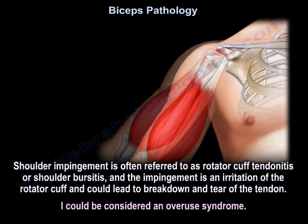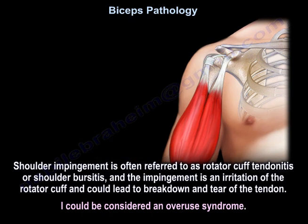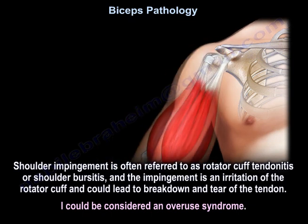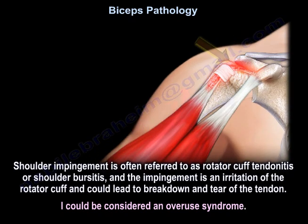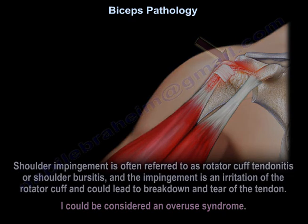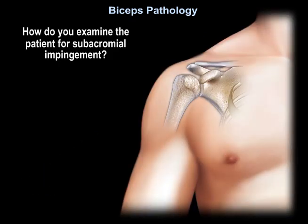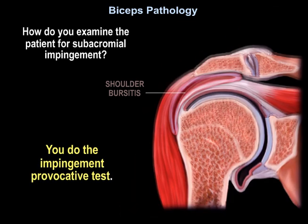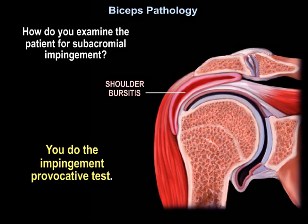Shoulder impingement is often referred to as rotator cuff tendonitis or shoulder bursitis, and the impingement is an irritation of the rotator cuff that could lead to breakdown and tear of the tendon — it could be considered an overuse syndrome. To examine the patient for subacromial impingement, you perform the impingement provocative test.